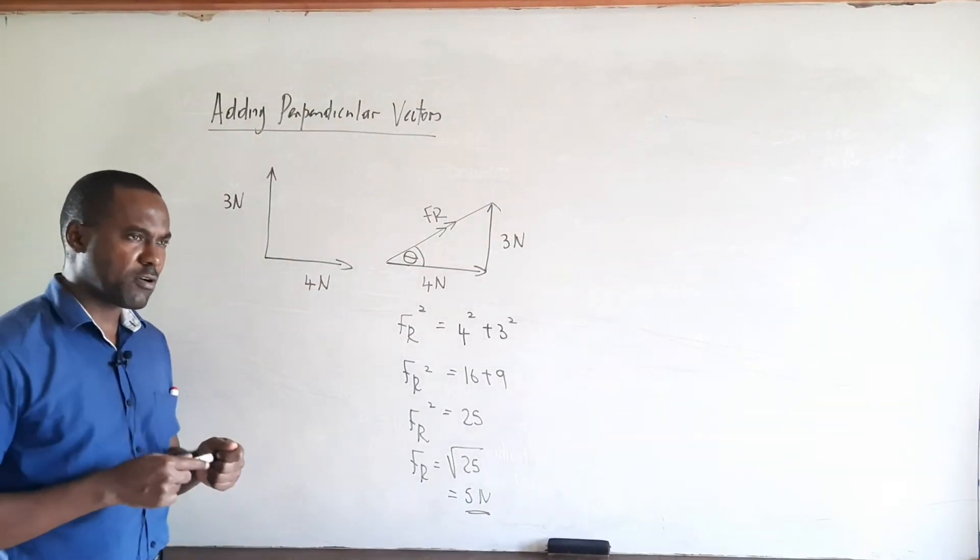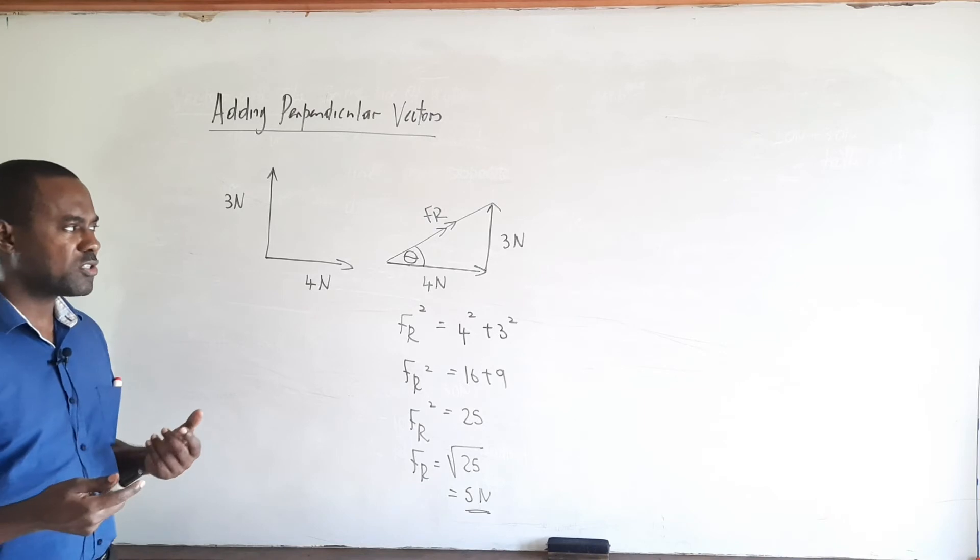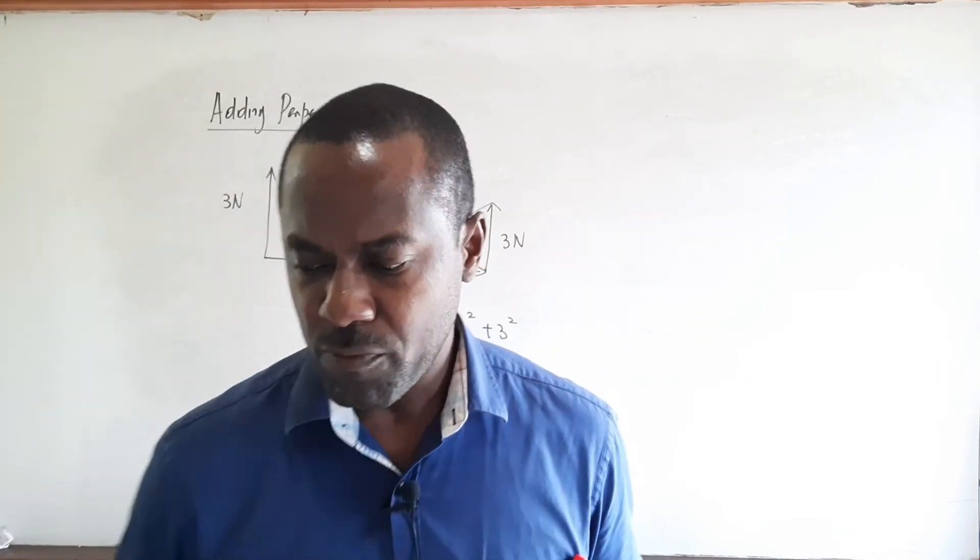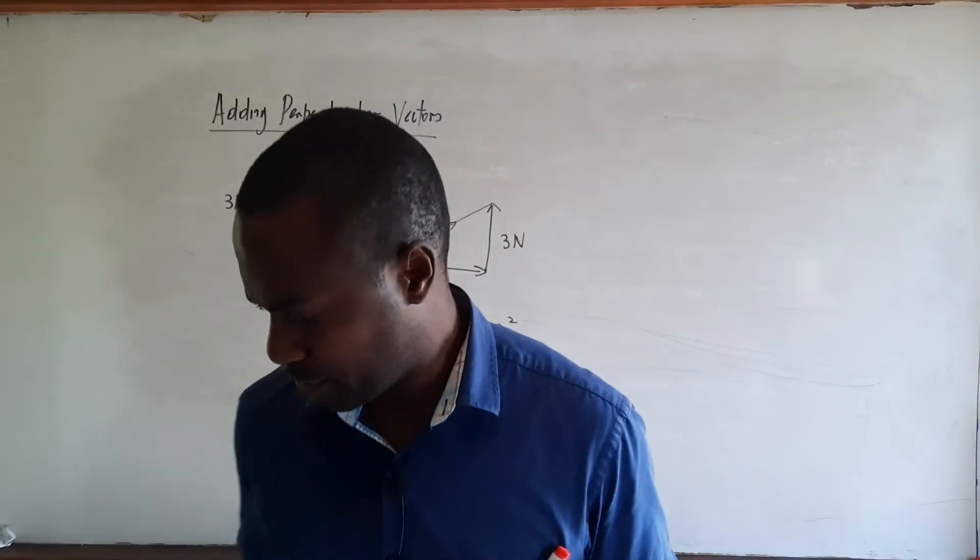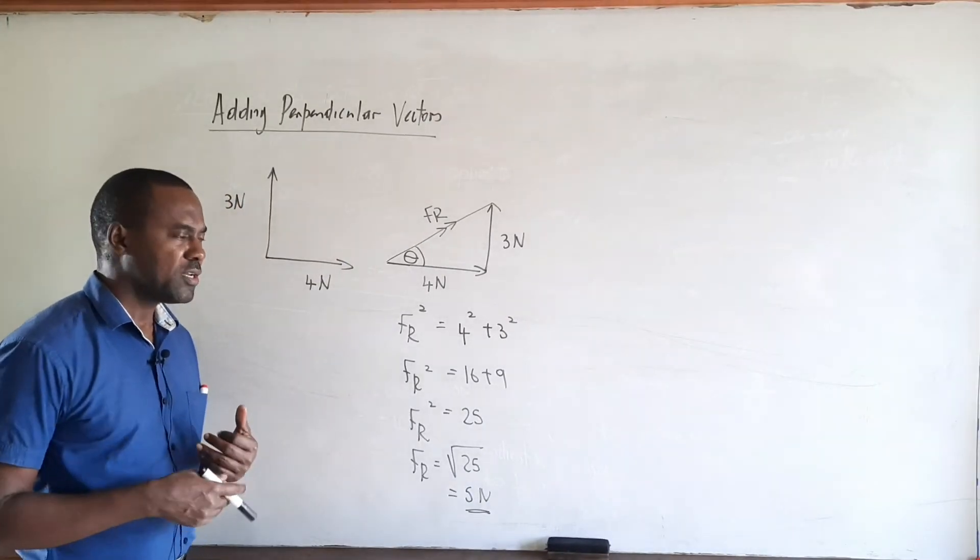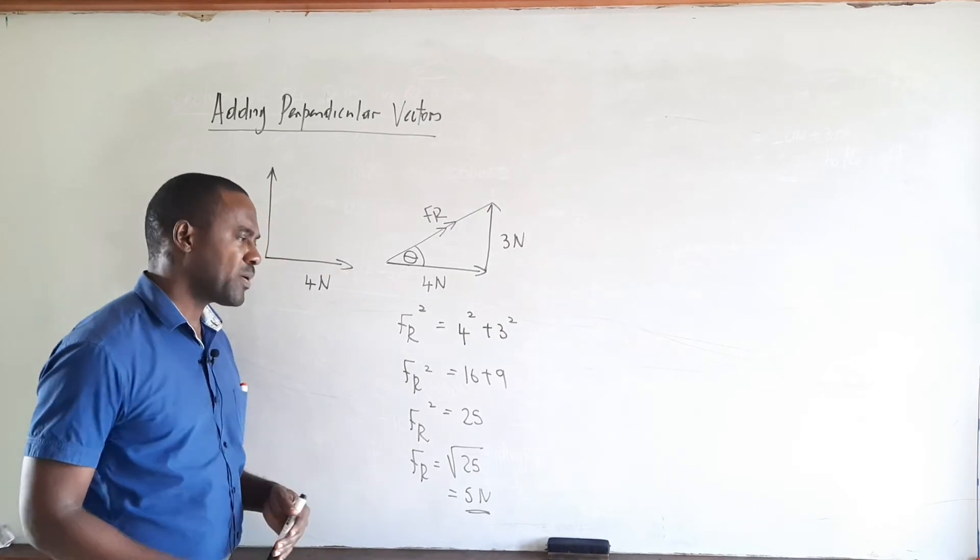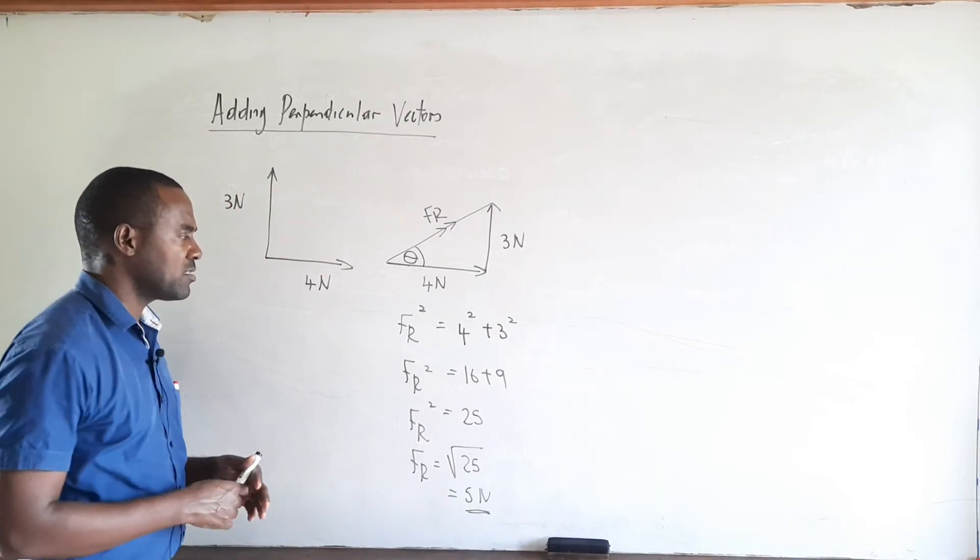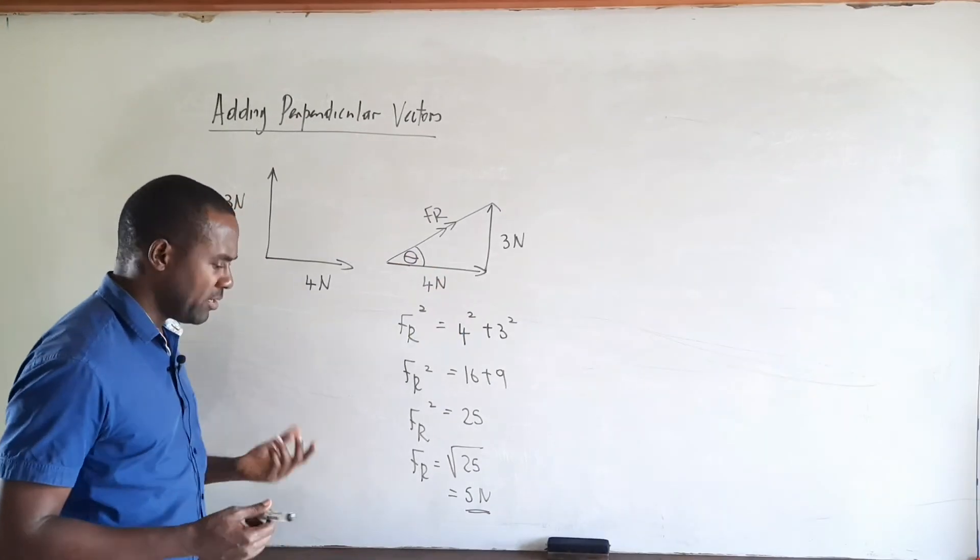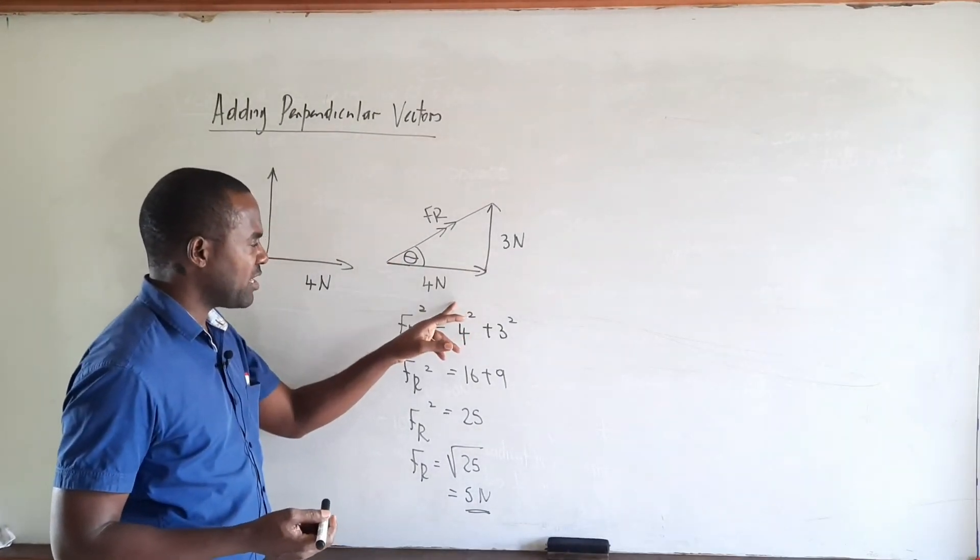But if you recall, force is a vector quantity, and not only must it have a magnitude, it must also have a direction. Therefore we must not only calculate the magnitude but we must calculate the direction as well. To calculate the direction we will use a trig ratio since we are dealing with a right angle triangle in which we now have all three sides. Typically we use the tan ratio since we will have the opposite as well as the adjacent. According to the tangent ratio, tan of angle theta is equal to the opposite over the adjacent.